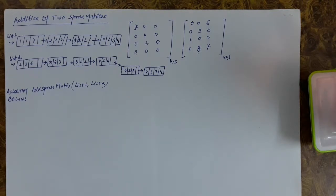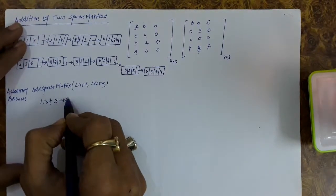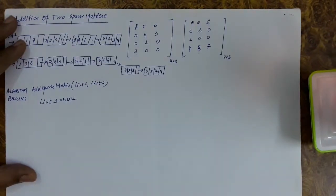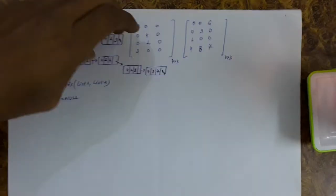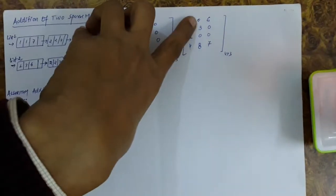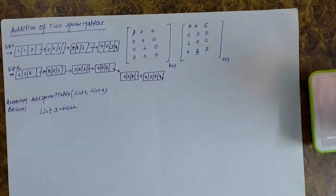For the addition of these sparse matrices, it is essential that we take a third linked list, which is initially null — meaning it has no elements or nodes at the beginning. For the addition, if the row number and column number of elements from the two matrices are the same, then only we will be able to add them. Since we have stored only the non-zero elements, we need to check the row number and column number of the corresponding element in the other linked list.